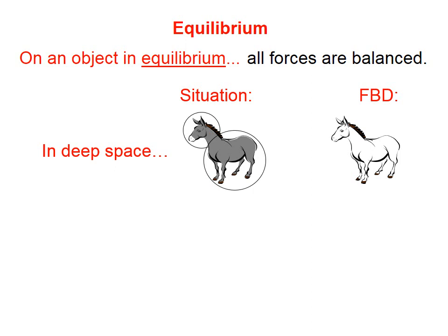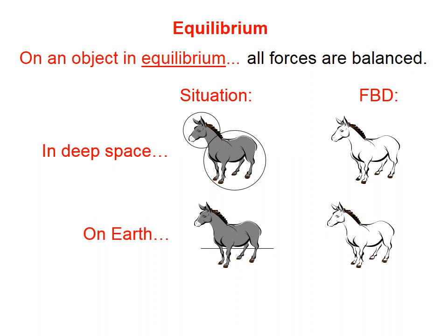But if he's moving — let's say to the left at 5 meters per second — he's going to continue moving at 5 meters per second. His state of motion is not going to change. Whether he's at rest or whether he's moving at a constant speed, his state of motion is going to remain exactly the same.